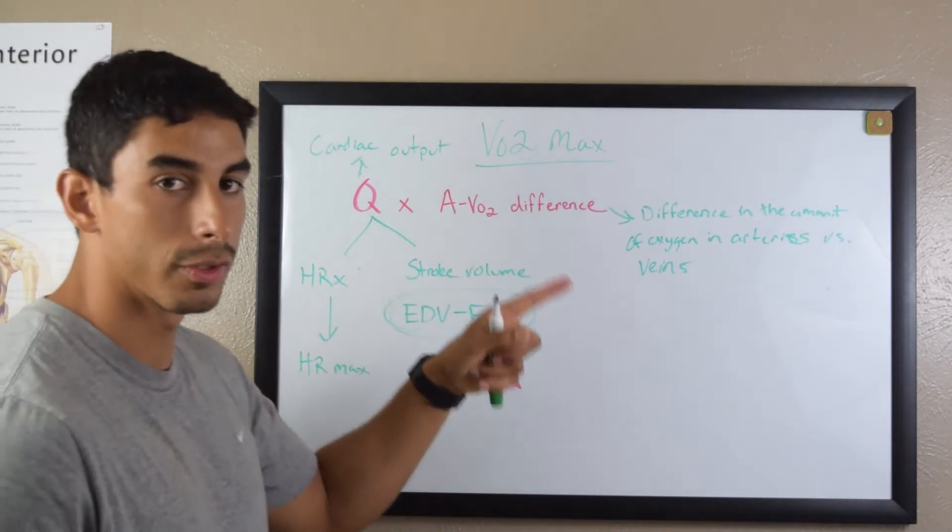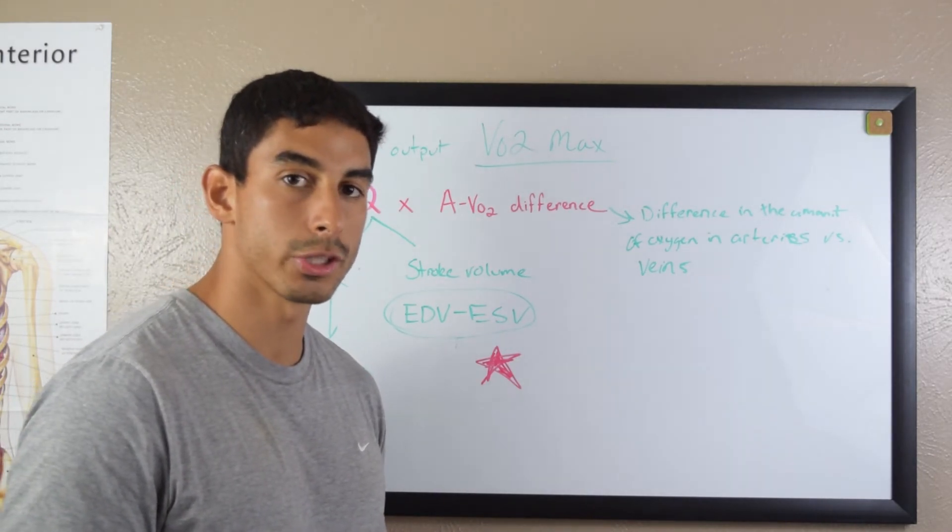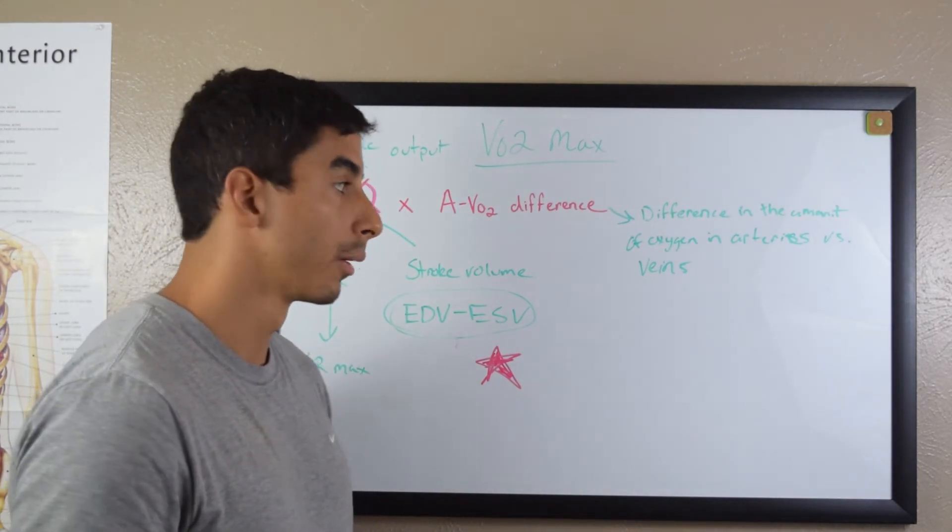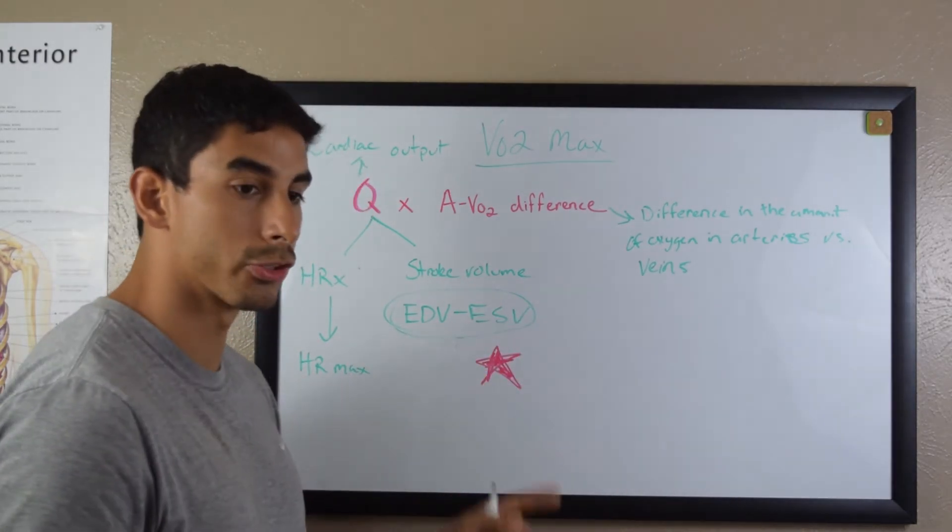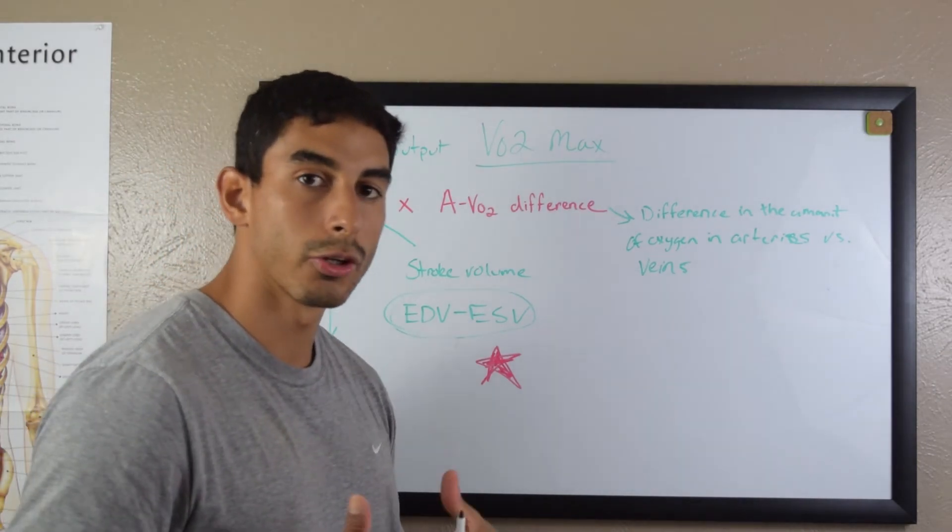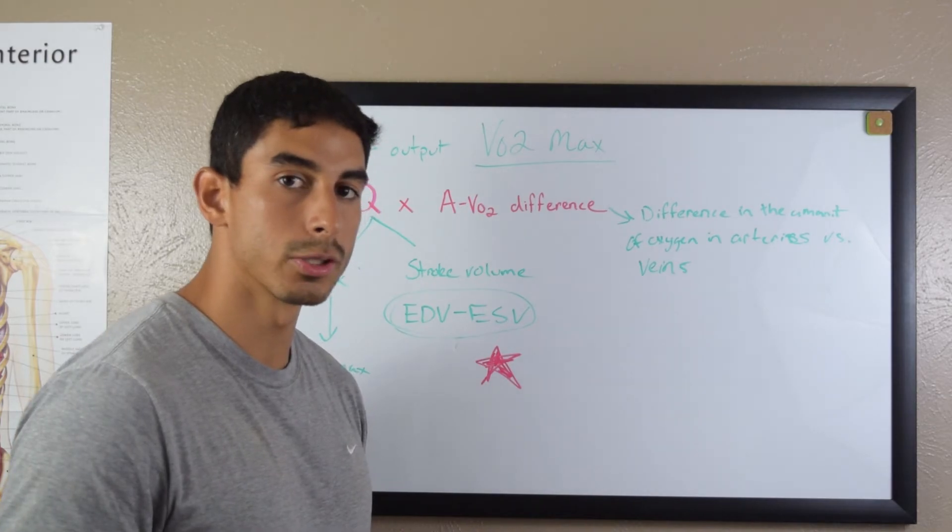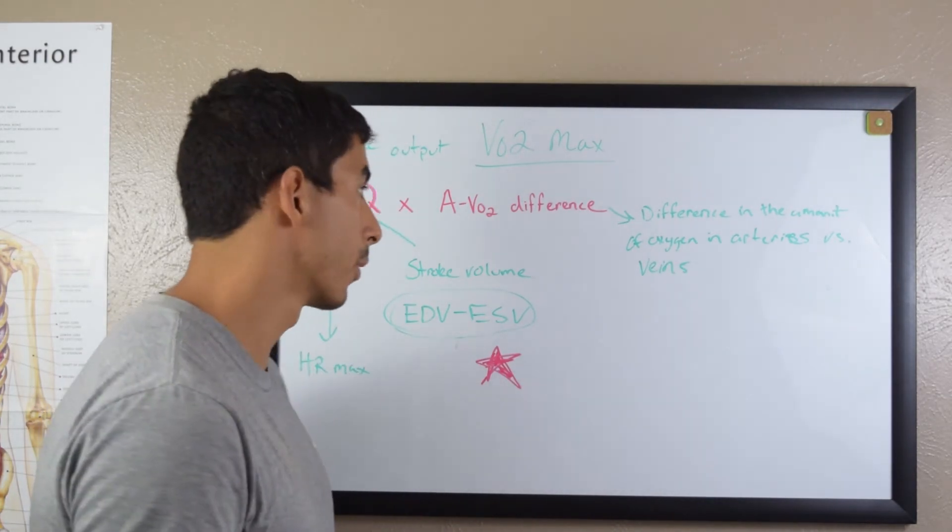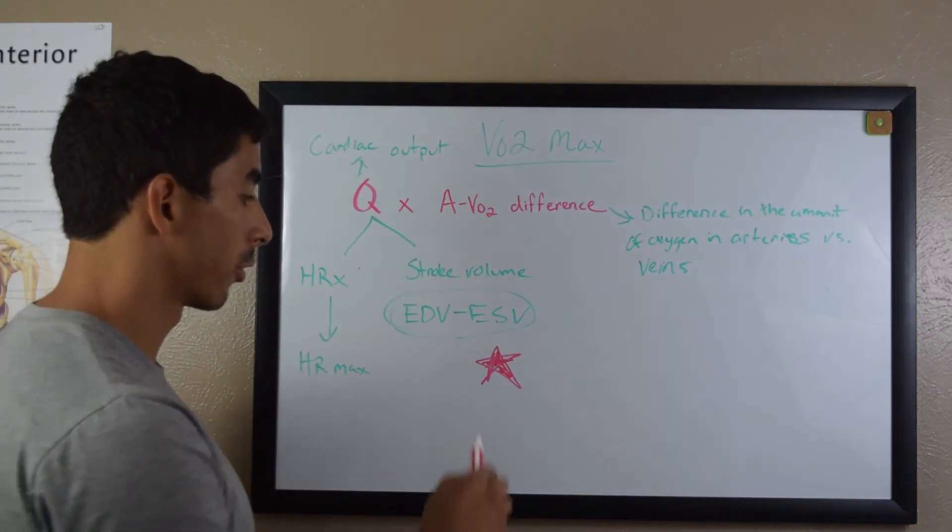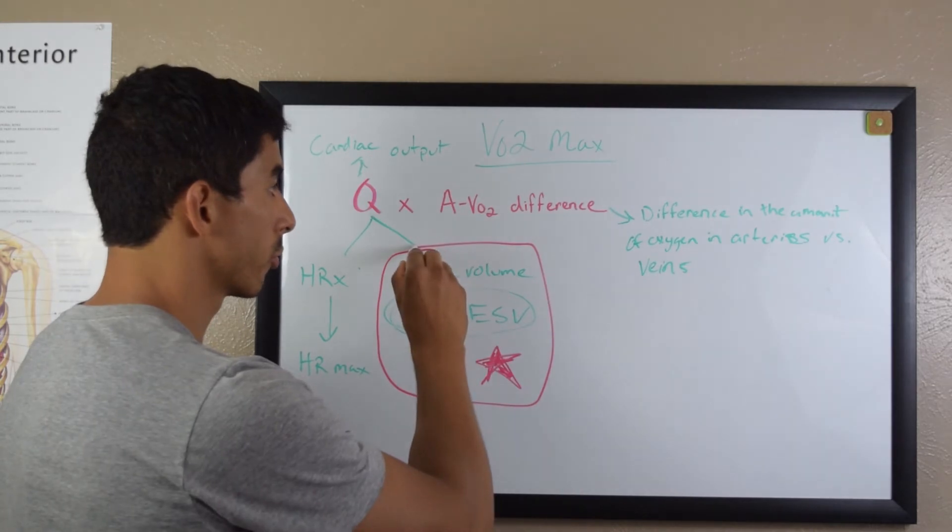AVO2 difference with training will improve. Your tissues will get a little bit better at extracting oxygen from the blood, but it improves slightly. Any increases in VO2 max are mainly driven by stroke volume. That's why it's called cardiovascular training. You're training your heart's ability to pump more blood and to pump it more vigorously, to just have stronger pumps.